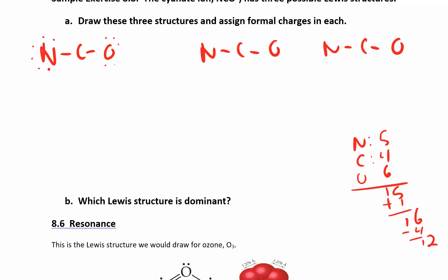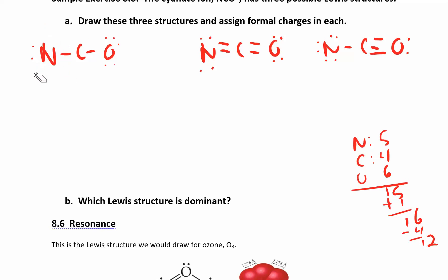With 16 electrons and 4 already used for single bonds, we have 12 remaining. After distributing those, carbon is not happy, so we need to form more bonds. There are three possible structures: you can take both extra pairs from the nitrogen side, one from each side, or both from the oxygen side. All three structures satisfy the octet rule with 16 total electrons.